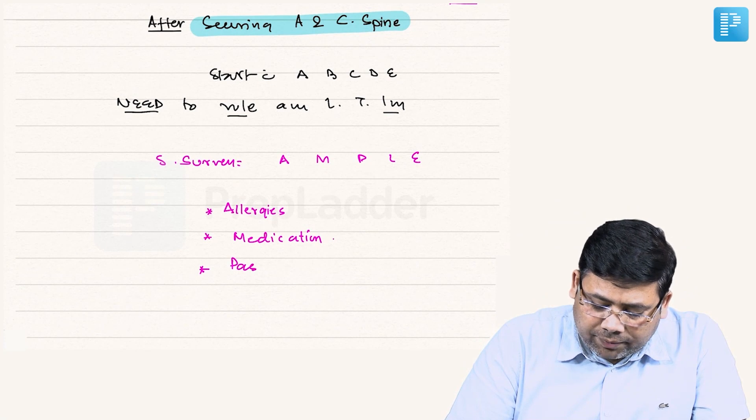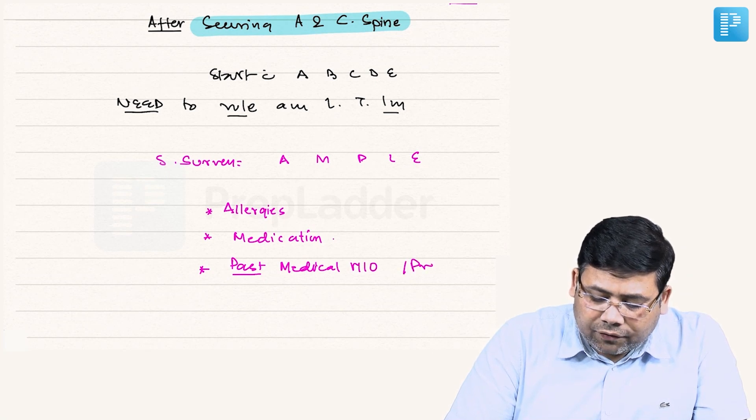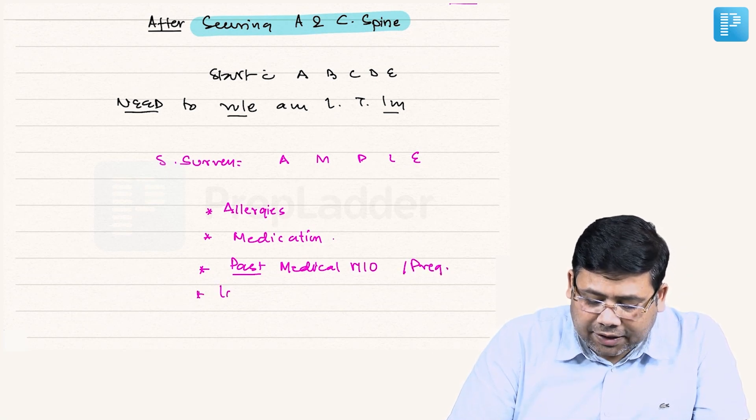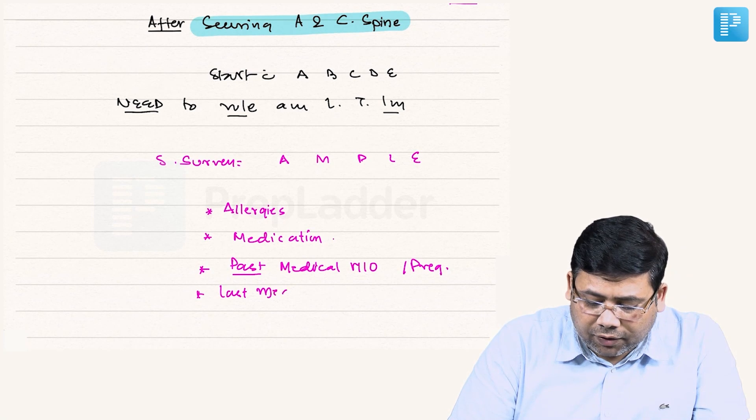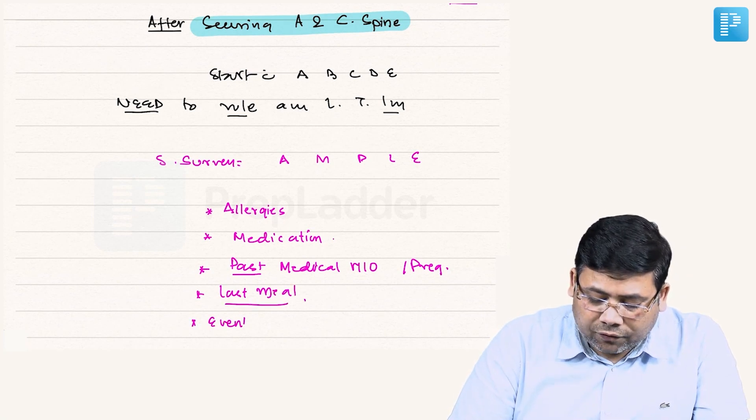P for past medical history. If you are dealing with a female patient, pregnancy status. L for the last meal because the patient might require surgical intervention also. And E is the event of trauma.